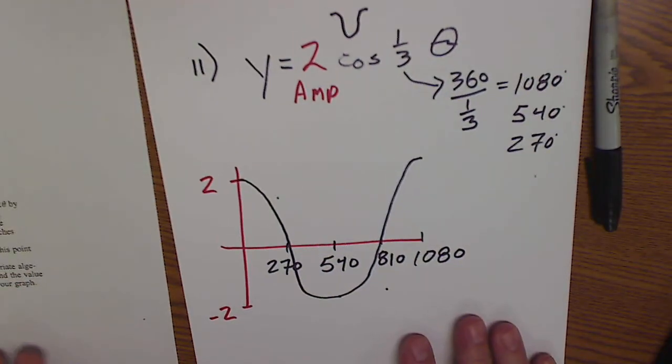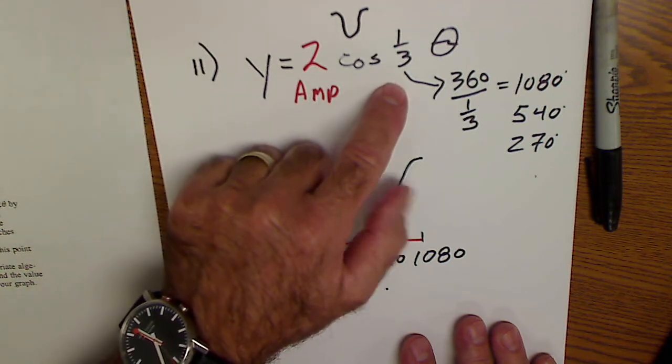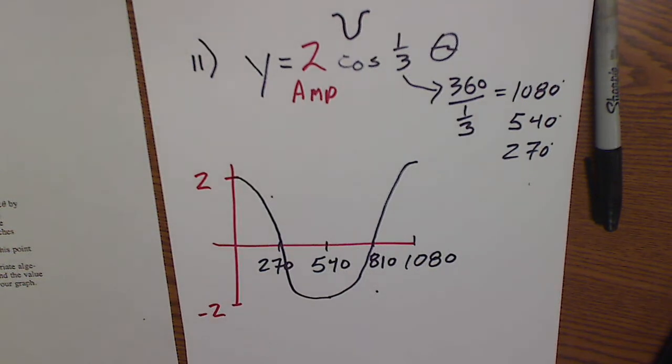And all we're doing right now is changing amplitudes and figuring out the change in periods by a change in B value. Okay.